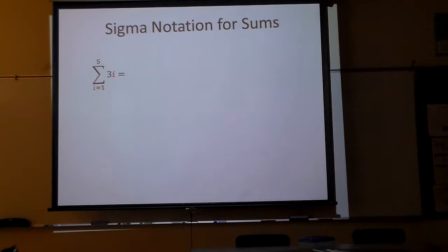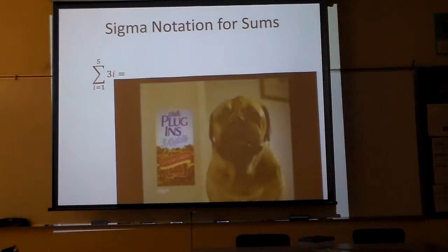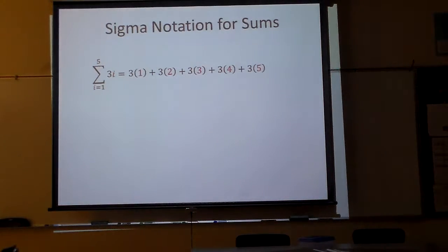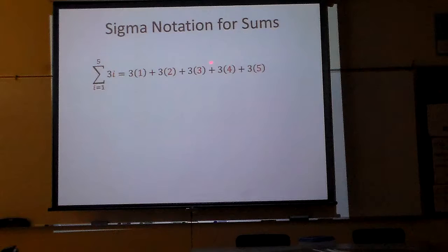So how do we do this? If i is one, I'm going to do three times i. Well, one way we can do this is just this. Notice, take three times one, plus three times two, plus three times three, plus three times four, plus three times five. Which would give me three plus six plus nine plus twelve plus fifteen, and if you add it together, you get forty-five.